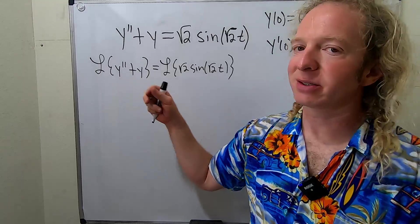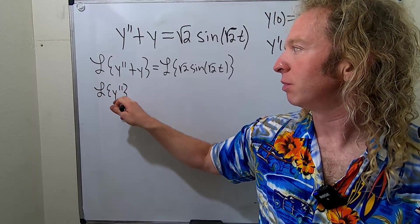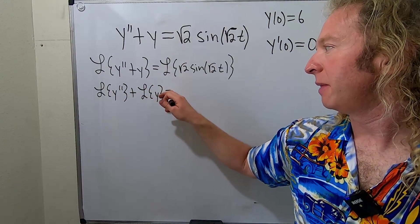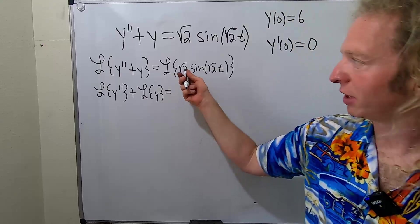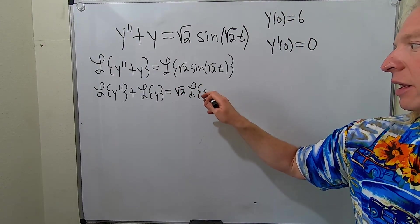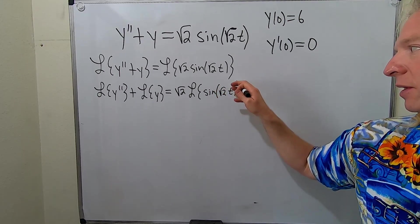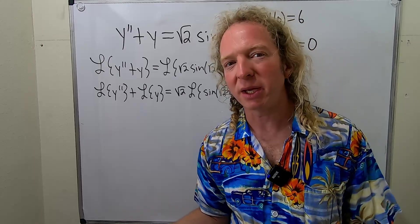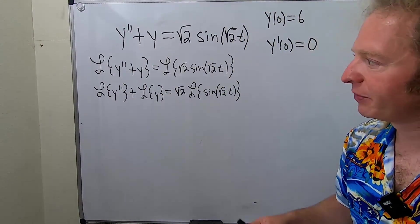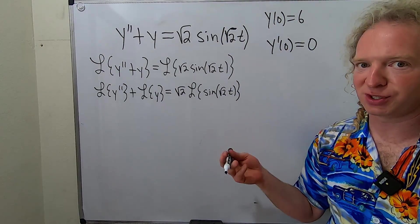Then you can use the fact it's linear. So it'll be the Laplace of y double prime plus the Laplace of y — that's from linearity. Likewise, we can pull out this constant. So this is the square root of 2 times the Laplace of sine of the square root of 2 times t. If I wasn't making a video I would have started with this step. So now we have to use the formulas — there are multiple formulas. Let me refresh your memory in case you've never seen this before.